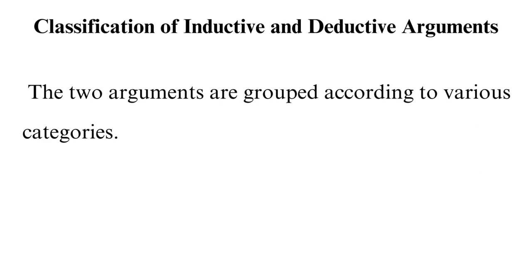Regarding the classification of inductive and deductive arguments, the two are grouped according to various categories. A deduction can be valid or invalid, sound or unsound. In a valid deduction, the conclusion is usually true if the premise is true. In an invalid deduction, there is a possibility of a false conclusion even if the premise is true. A sound deduction means the argument is valid and the conclusion is true, while unsound includes all invalid arguments.